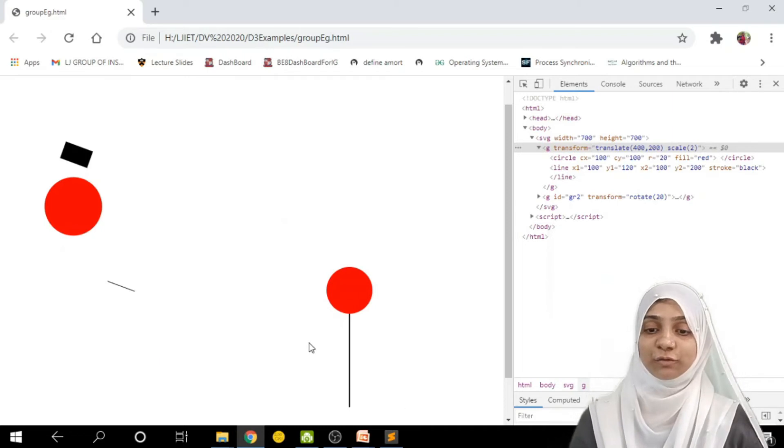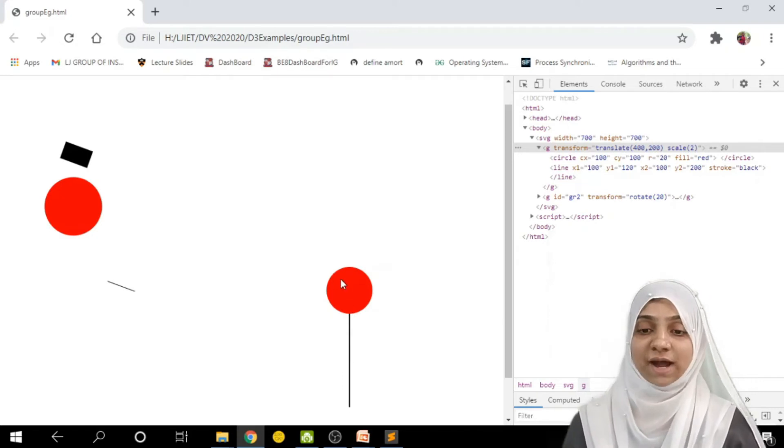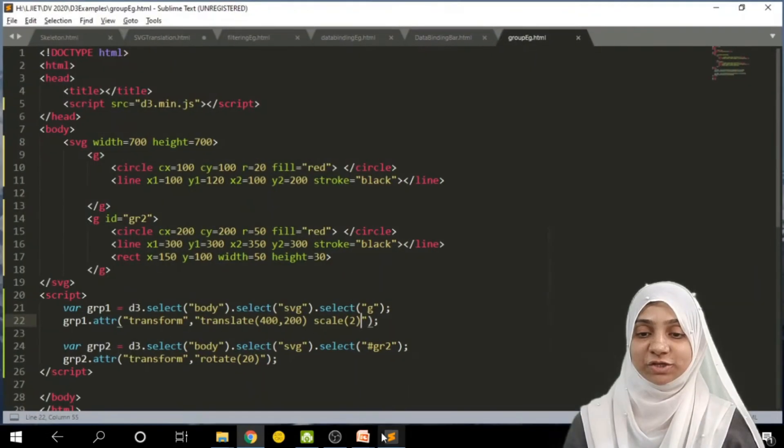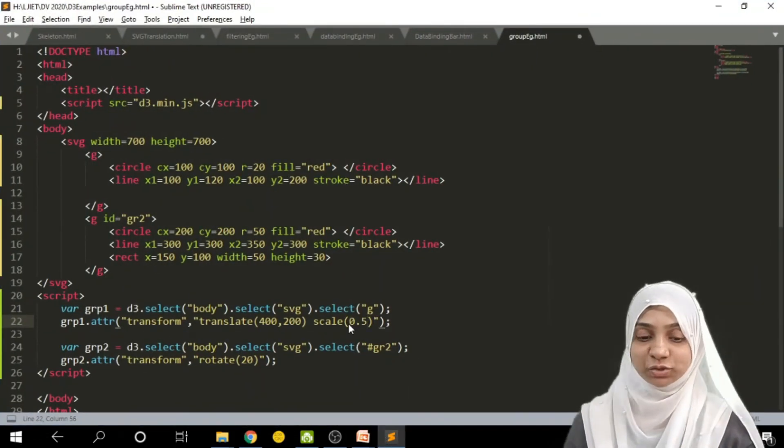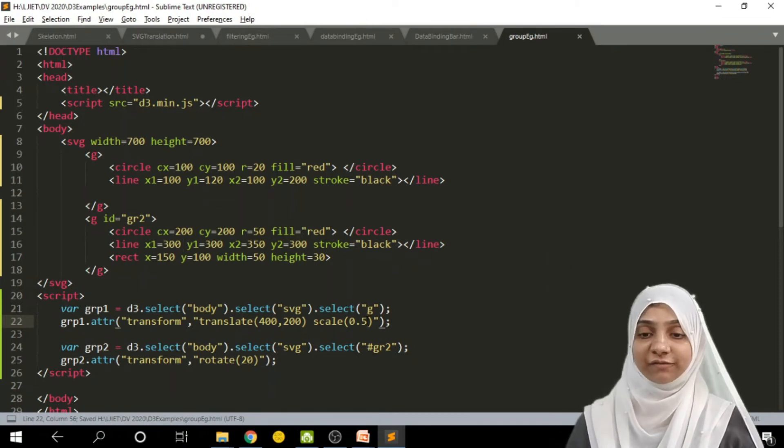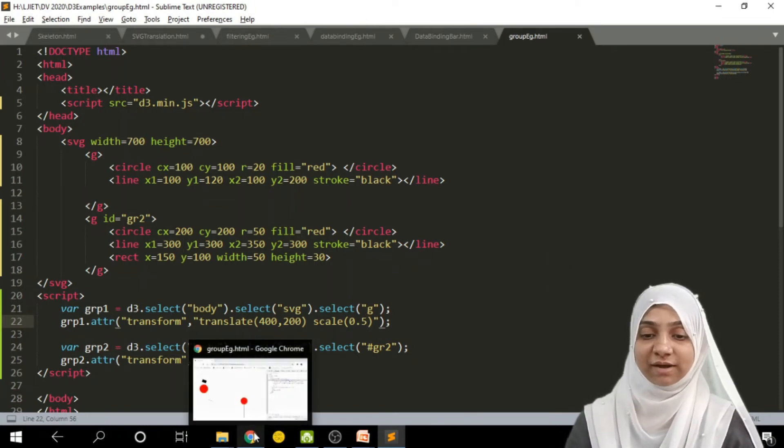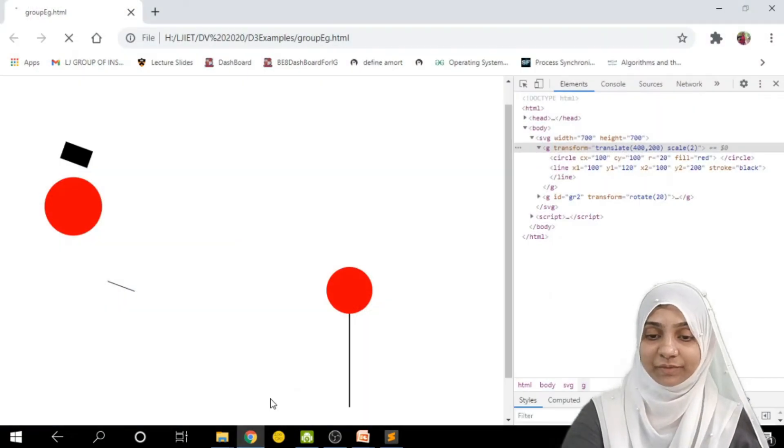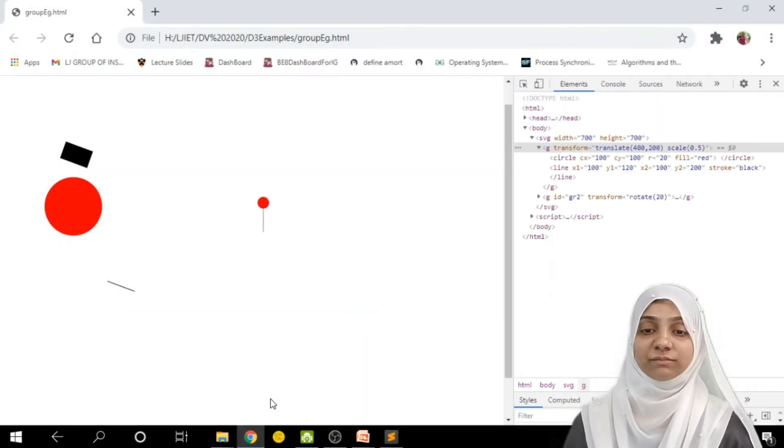As you can see, first group, which is actually translated at its new location, 400, 200, is now scaled up. It is getting enlarged in size. If I wish to scale down, if I wish to shrink it in half of its size, I will scale it to 0.5, which is nothing but half. Refresh the page.